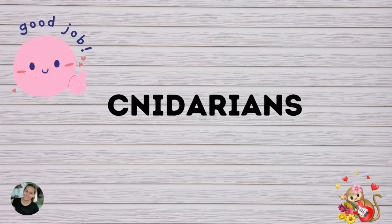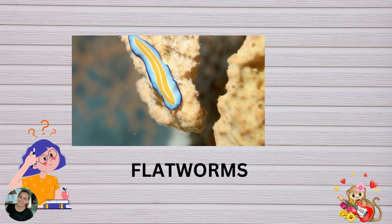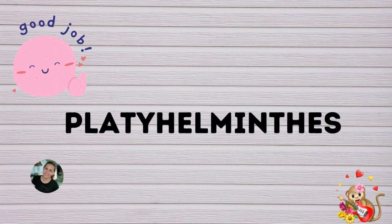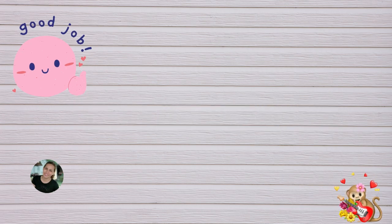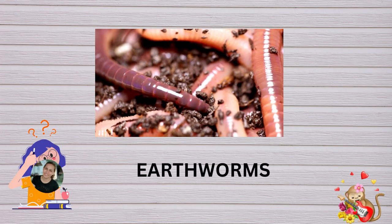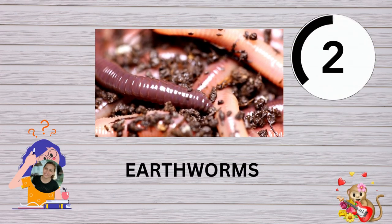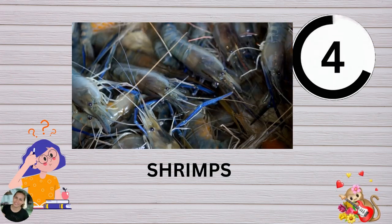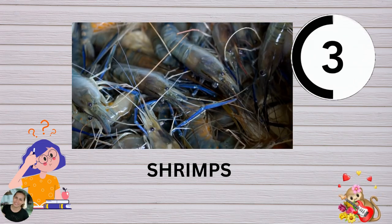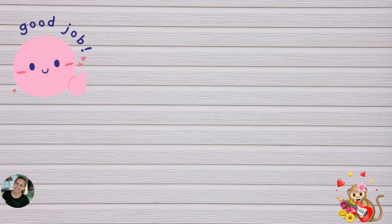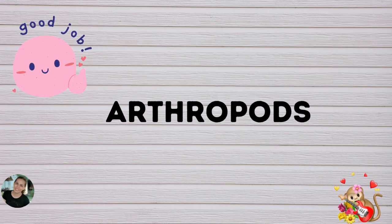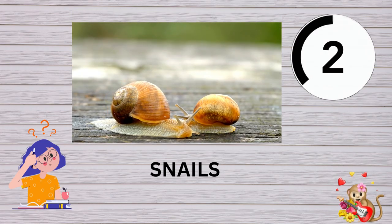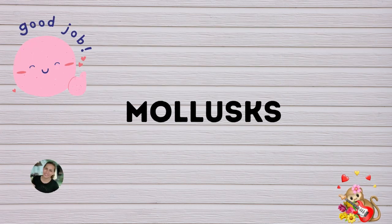Good job! The answer is cnidarians. Number two: blackworms. Very good, the answer is annelids. Number three: earthworms. You got it, the answer is annelids.